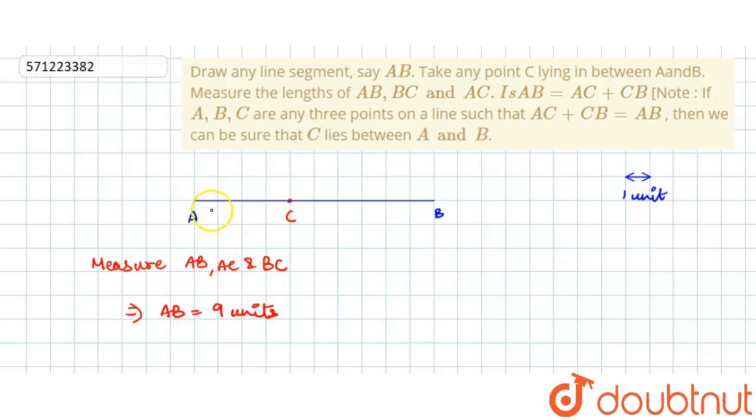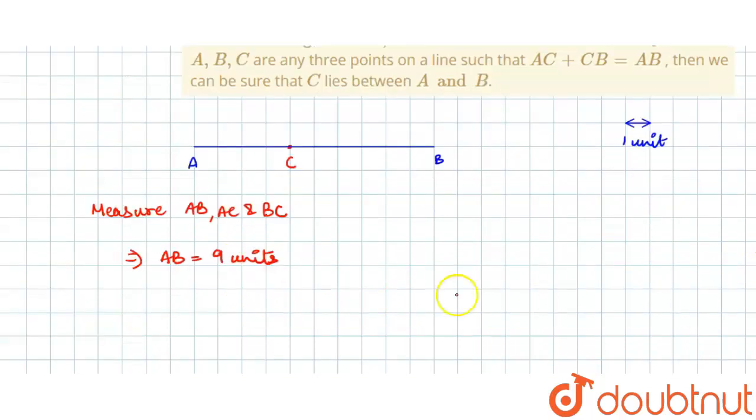Now we will measure AC. Similarly, the length of AC is equal to one, two, three, four—that is four boxes, four units.